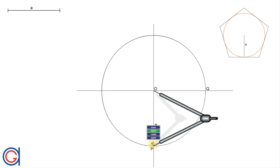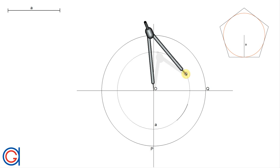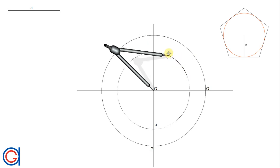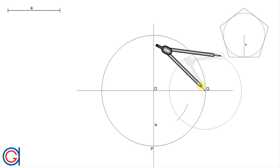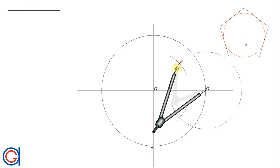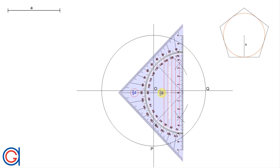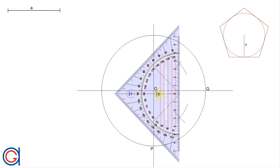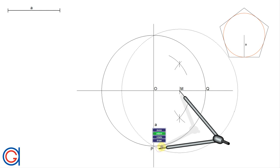Now we work out the perpendicular bisector of the radius OQ. With our compass set on point O and a radius slightly greater than half of OQ, we scribe an arc above and below the line. With the same radius centered on point Q, we scribe another arc intersecting the previous one at two points. Joining these two points, where it cuts the radius OQ gives us the midpoint M.